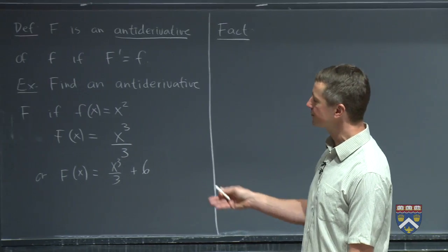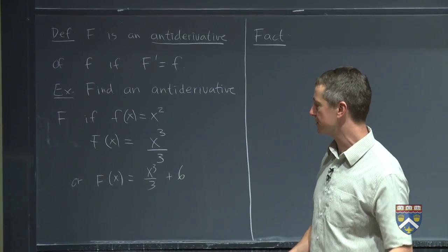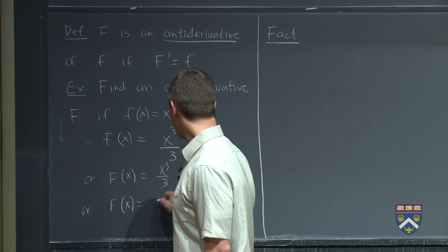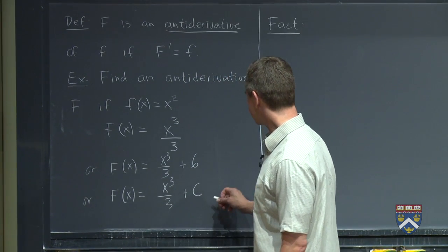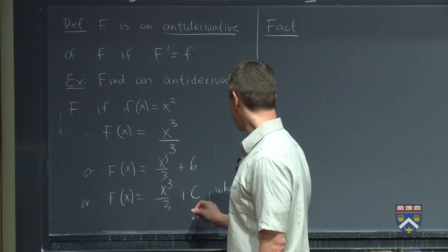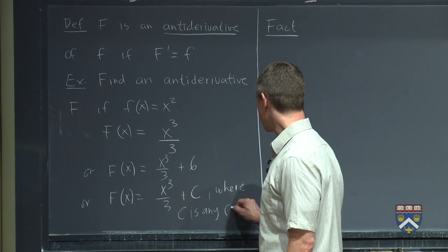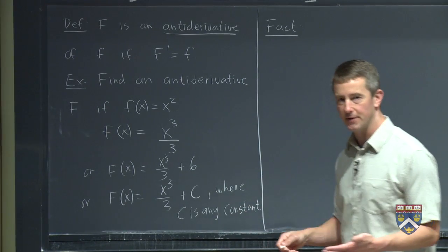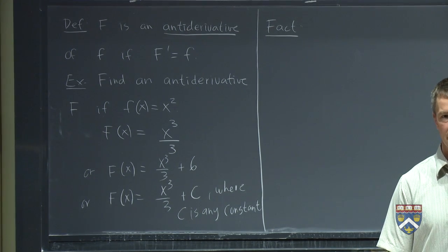Is that still an antiderivative? Absolutely. Because when we take the derivative, what happens to the 6? The 6 is an additive constant, it just vanishes. Was there anything special about 6? Definitely not. In fact, we could say x cubed over 3 plus c, where this c, c is any constant. Because no matter what constant I add there, when we take the derivative, the answer is the same because the constant goes away.